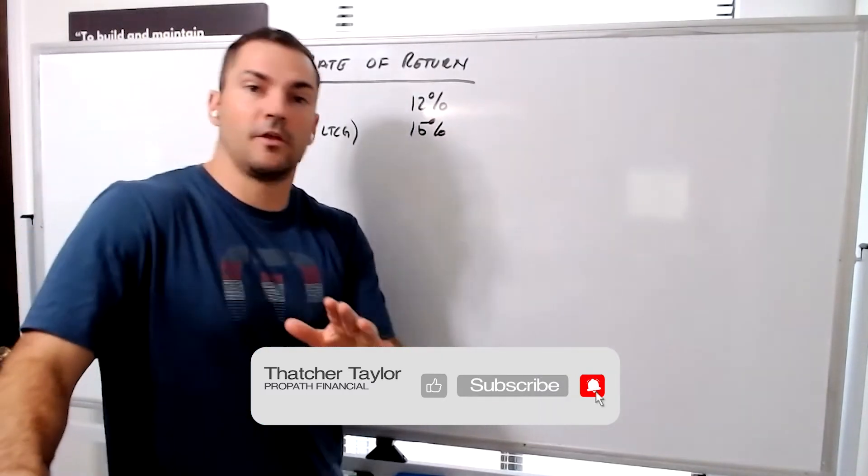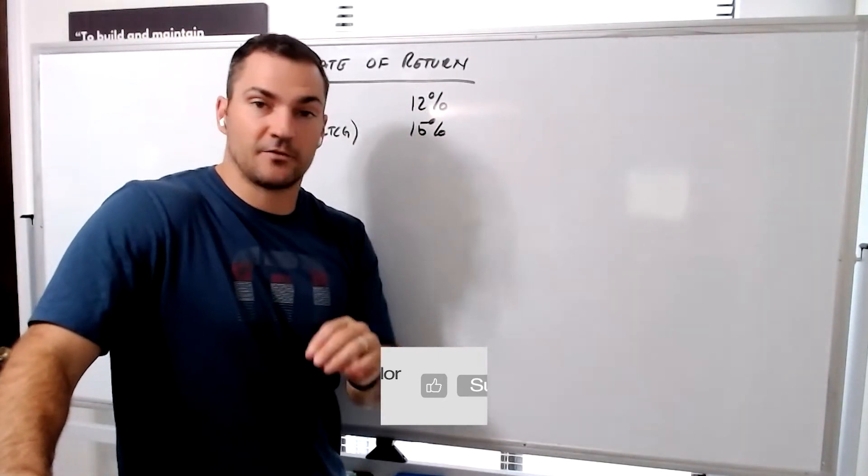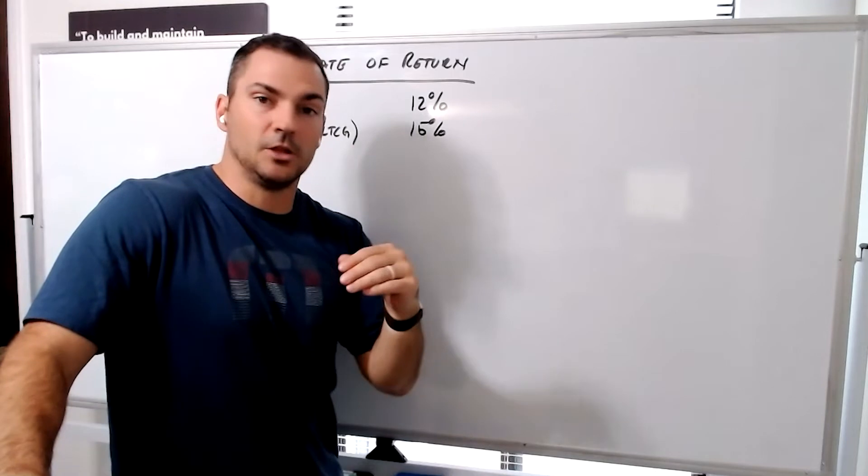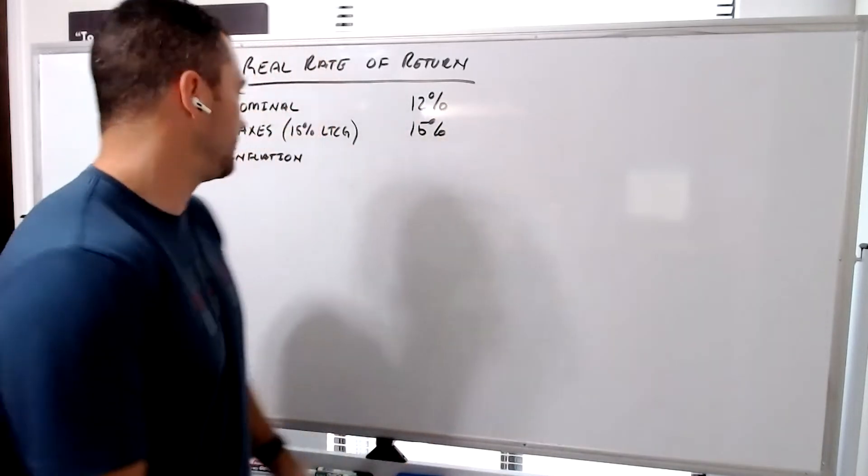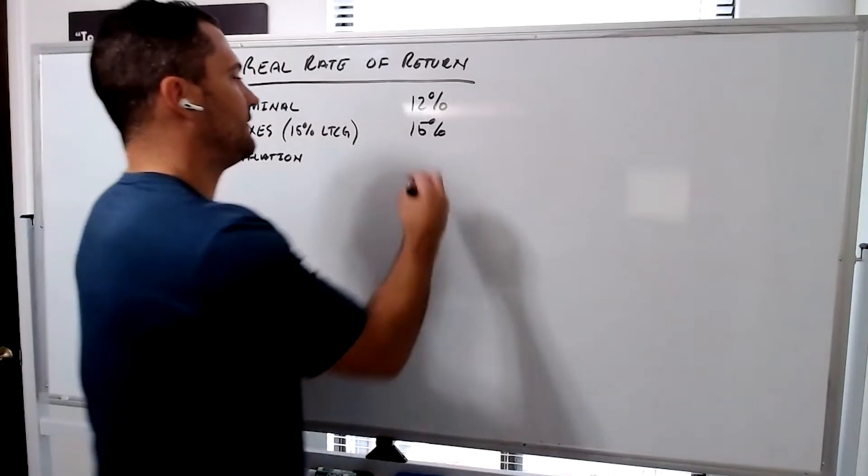I'm just using that generic number. I know there could be a Medicare surtax of 3.8%. Sometimes it could be lower. Even if you make a ton of money, it could be higher, but we're just going to use 15% as this example. Let's say inflation's at 3%.